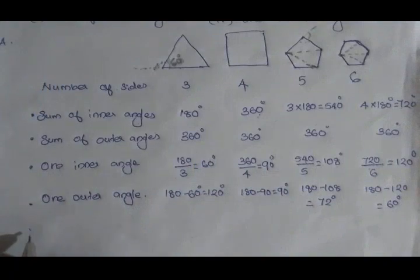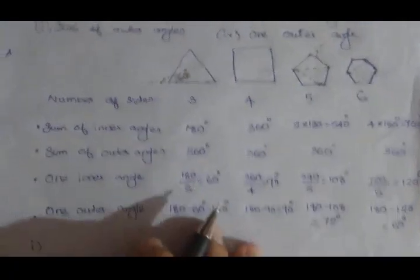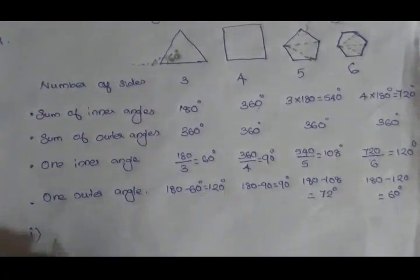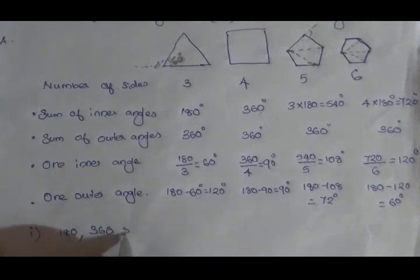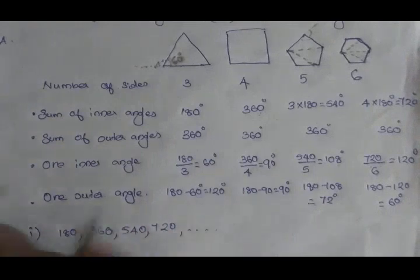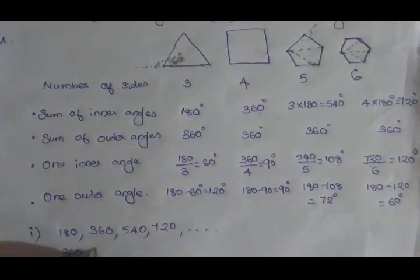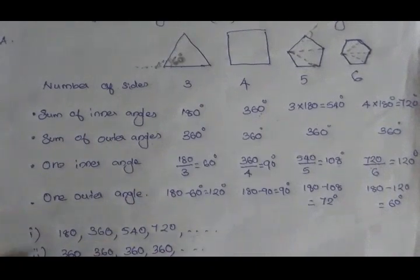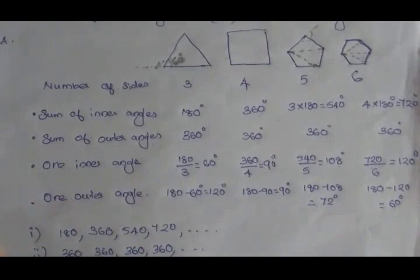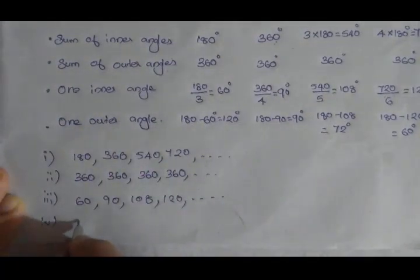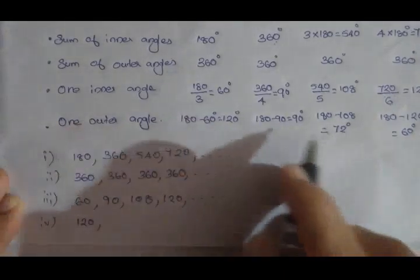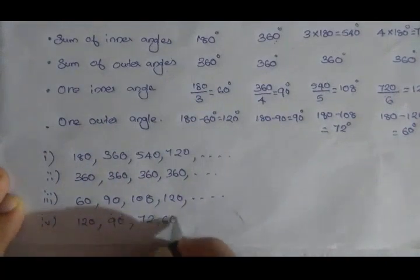If we look at the inner angles in sequence: 60, 90, 108, 120, etc. The sum of outer angles for any regular polygon is always 360, 360, 360, 360. The outer angles in sequence are: 120, 90, 72, 60, etc.